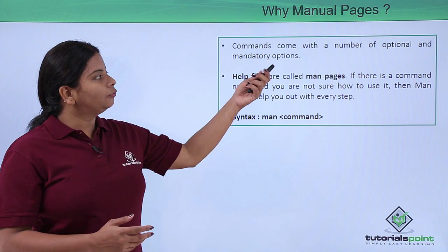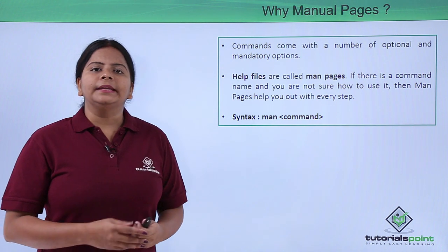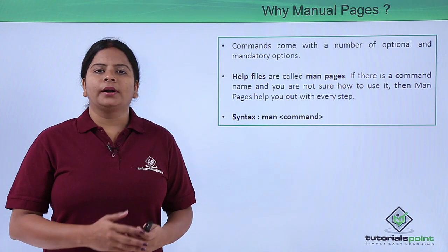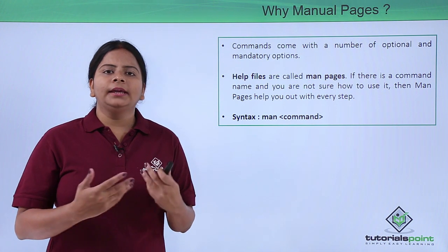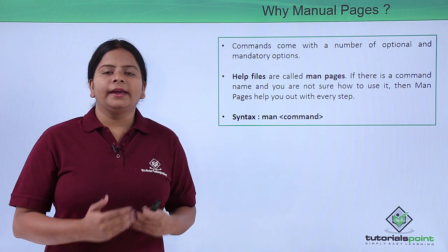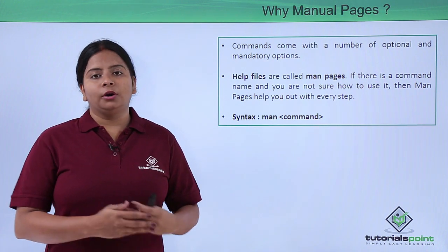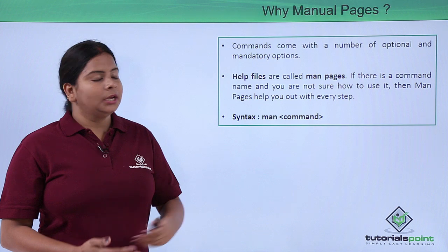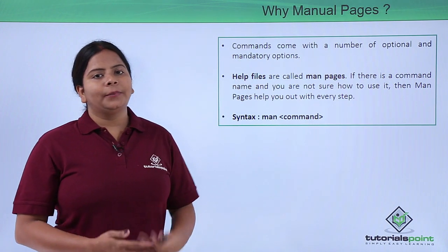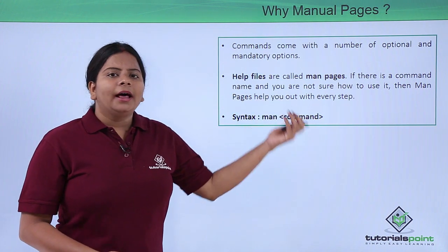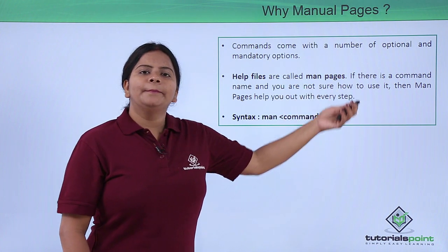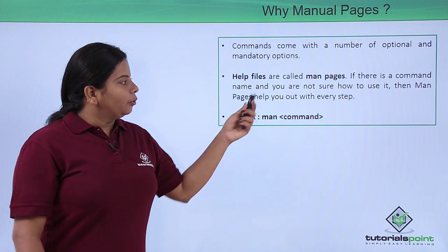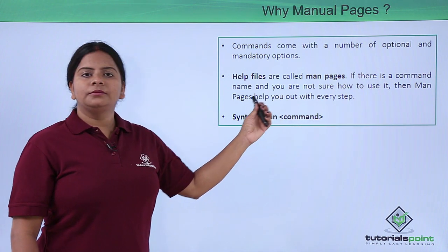Using these help commands you can get the number of options for particular commands. For example, ls: ls -a is for hidden files, ls -i for inode numbers, ls -l for getting details of files. All these parameters give completely different outputs of the same list. There are many commands with different parameters to give different outputs. Those options can be checked using manual pages, which is also called man pages — the short form of manual pages.